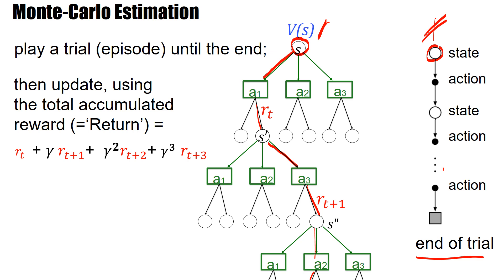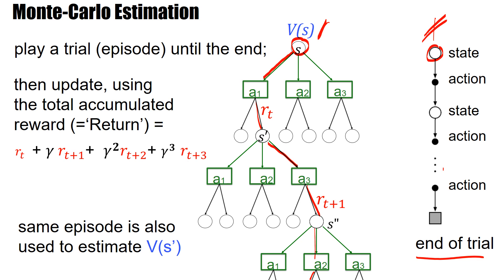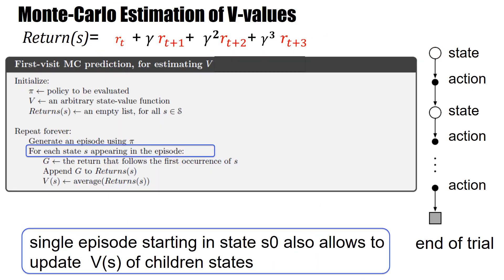There's one more interesting aspect I'd like to point out. While you play this episode, you pass state S prime. The total returns on that very first episode after S prime can also be used to estimate V of S prime. With these ideas, we are ready to understand the algorithm for Monte Carlo estimation of V-values.